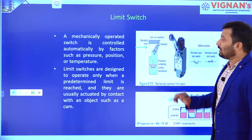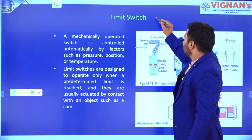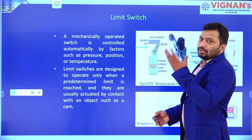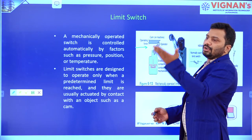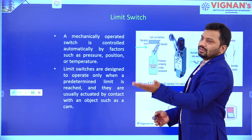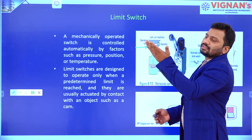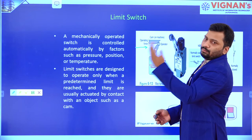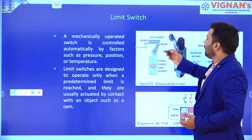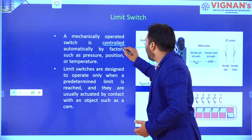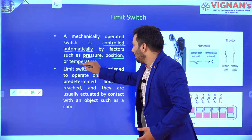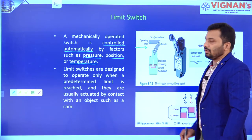This switch is normally used to find out pressure in industry. It is an automatically mechanical control limit switch. For example, when some limit temperature is reached, it is going to be open or closed. As well as when some pressure reaches some level and the limit is crossed, it is going to change position — on and off this particular circuit. So, this one is controlled automatically by taking pressure, position, and temperature as input variables.